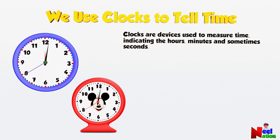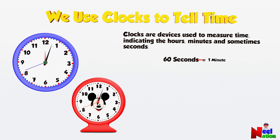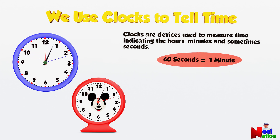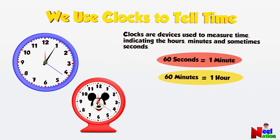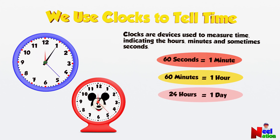Do you know how long hours, minutes, and seconds are? A second is the shortest. 60 seconds make one minute. 60 minutes make one hour. 24 hours make one day.